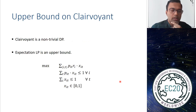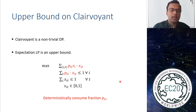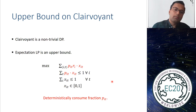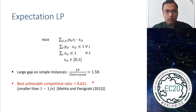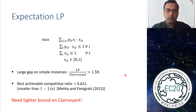In past work, a nice upper bound on clairvoyant is given by the expectation LP, which turns the stochastic reward process into a deterministic fractional consumption process: whenever you make a match, you consume a fraction p_{i,t} of the resource rather than involving a stochastic process. However, Mehta and Penegra showed that even for identical probabilities, comparing against the expectation LP cannot yield any result better than 0.621 — which is smaller than 1 − 1/e. Since we show 1 − 1/e for decomposable probabilities, we naturally need a tighter bound on clairvoyant.